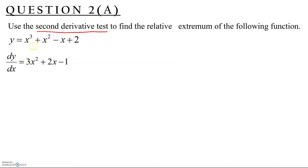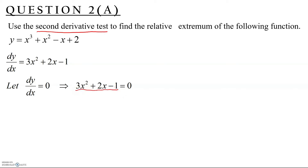This is our dy/dx. We equate it to zero and factorize using a calculator, getting (3x − 1)(x + 1) = 0. So our critical values are x = 1/3 and x = -1.